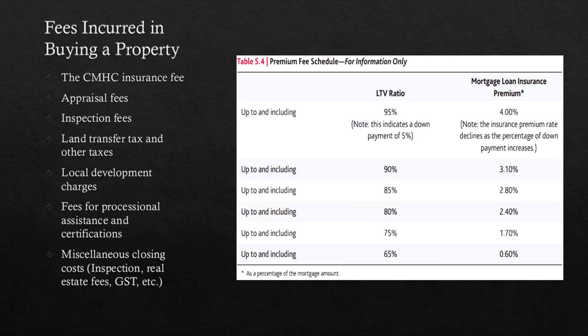There are several fees incurred when buying a property. The CMHC insurance fee is only required if you put less than 20% down — putting 20% or more avoids this cost entirely. Other fees include appraisal fees, inspection fees, land transfer tax, local development charges, fees for professional assistance and certifications, real estate fees, and various other miscellaneous closing costs. There are quite a lot of different fees in buying a property, so it's something to be aware of.